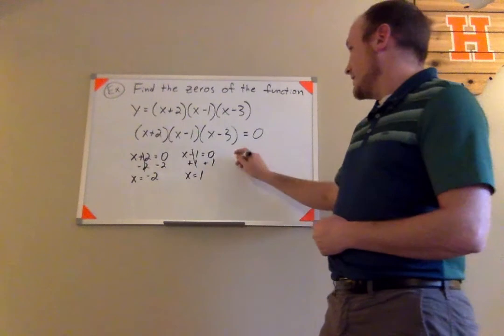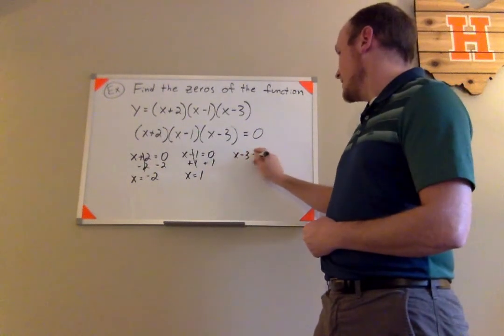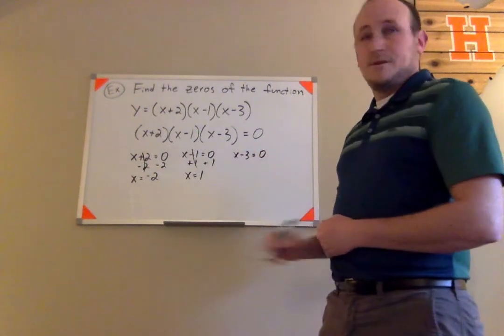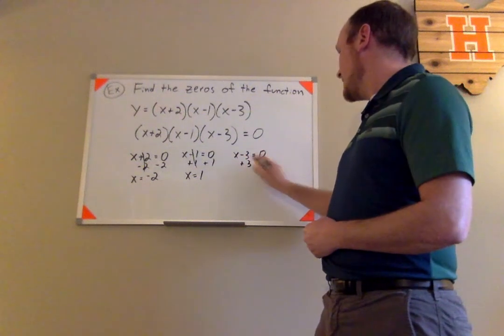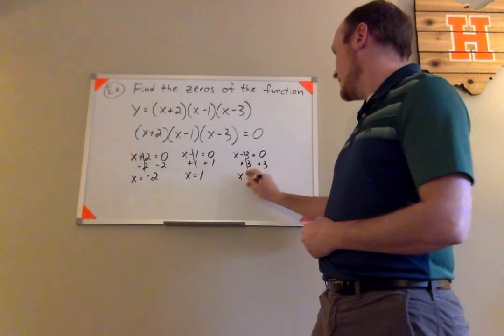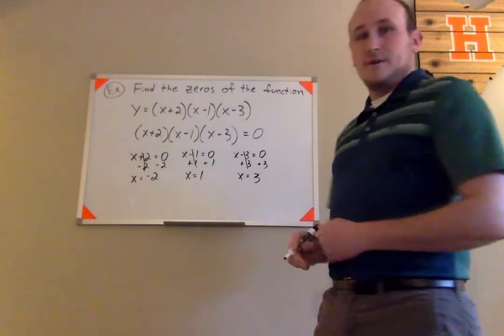And then finally, set the last factor of x minus 3 equal to zero. Add 3 on both sides. And you will get that x equals 3 for that.